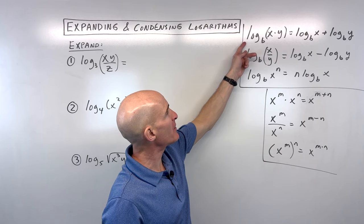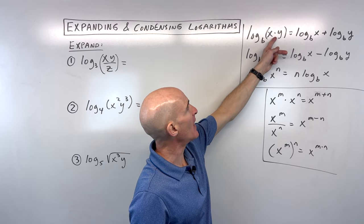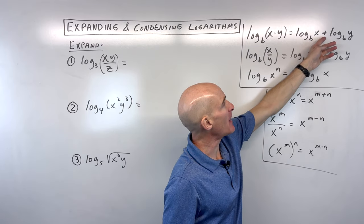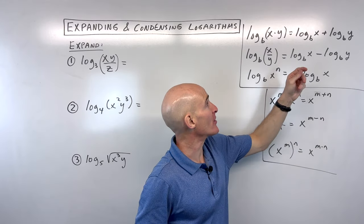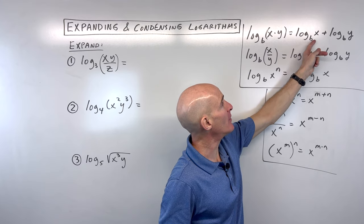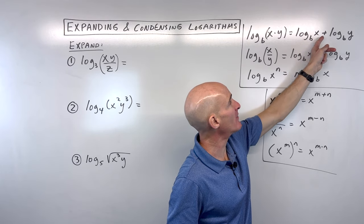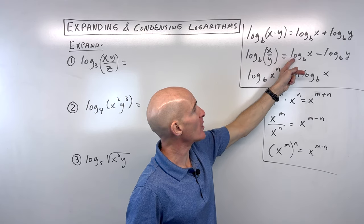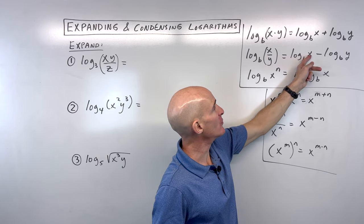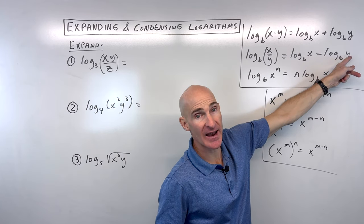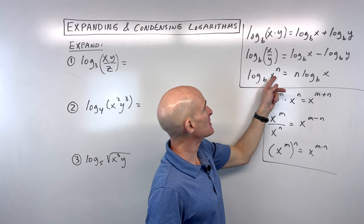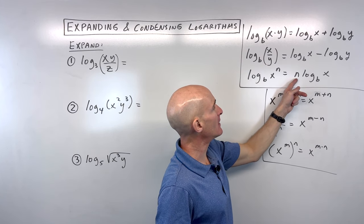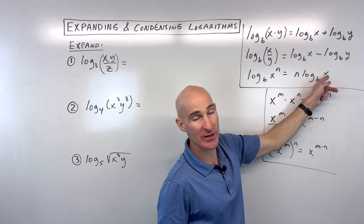When you're multiplying — log base b of x times y — you can expand it by writing it as the sum of two logs: log base b of x plus log base b of y. When you're dividing, you write it as the difference: log base b of the numerator minus log base b of the denominator. And when you have log base b of x to the nth power, you can bring that n down in front: n times log base b of x.